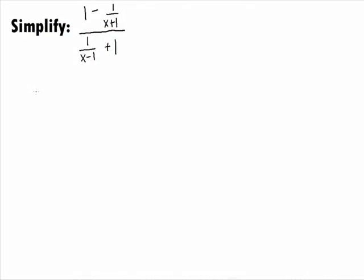In this example, we want to simplify the complex fraction of — in the numerator, we have 1 minus 1 over x plus 1 — over the denominator of 1 over x minus 1 plus 1.